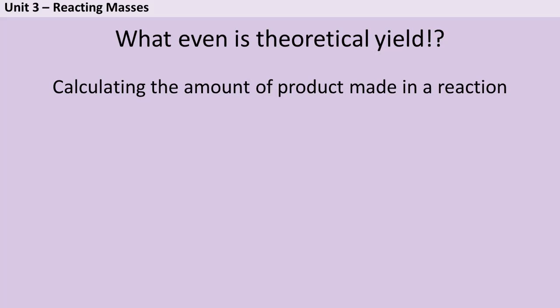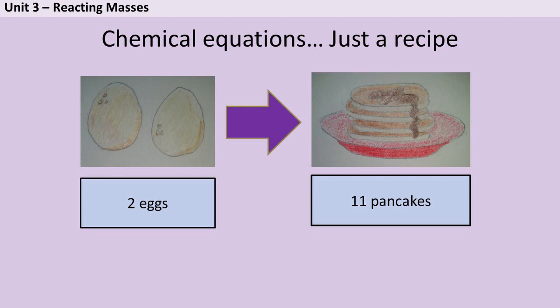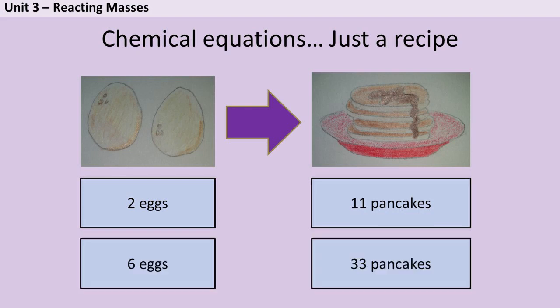Before we start, let's talk about what it is we're actually working out. Imagine you have a recipe and the recipe says that if you have two eggs you can make 11 pancakes. If I told you I was going to give you six eggs, then it wouldn't take you much to figure out that you could make 33 pancakes because you could just use that ratio.